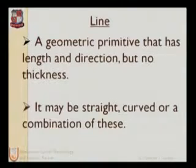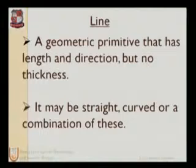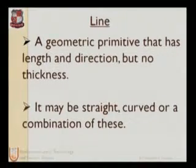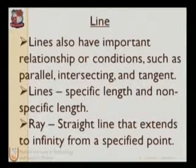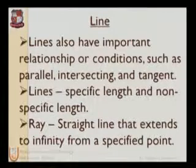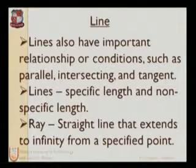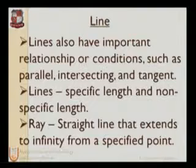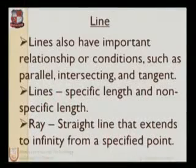Next we have the line. A line is a geometric primitive that has length and direction but no thickness — it has zero thickness. It may be straight, curved, or a combination, for example an arc. Lines also have important relationships or conditions such as parallel, intersecting, and tangent. In today's session we will see how to create parallel lines, intersecting lines such as perpendicular lines, and how to create tangents and various forms of tangents.